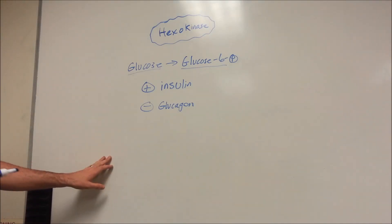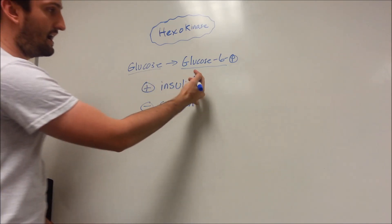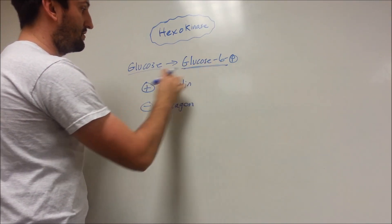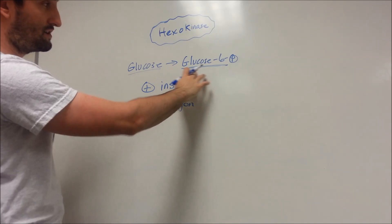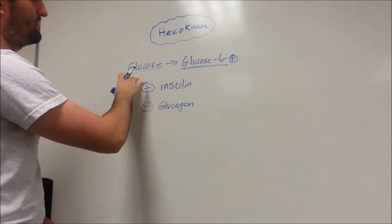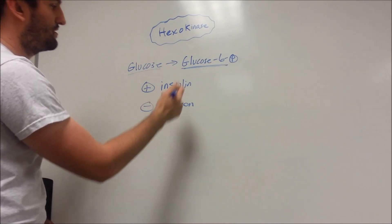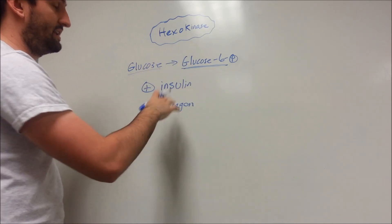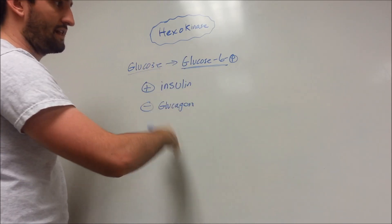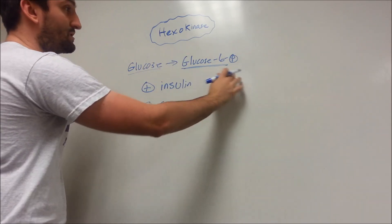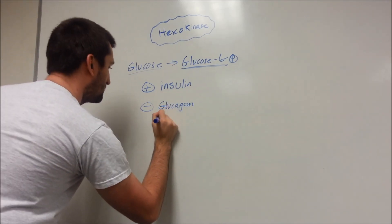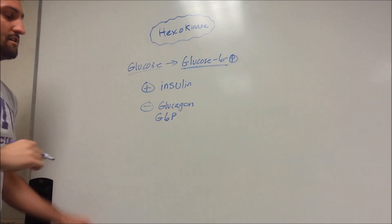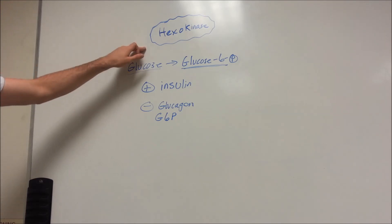A few other things to note: a high product-to-reactant ratio — if you have a whole bunch of glucose-6-phosphate with very little glucose — is going to inhibit this enzyme. It's saying we need to catch up in the glycolysis pathway; we have too much glucose-6-phosphate. So glucose-6-phosphate is also going to inhibit hexokinase.